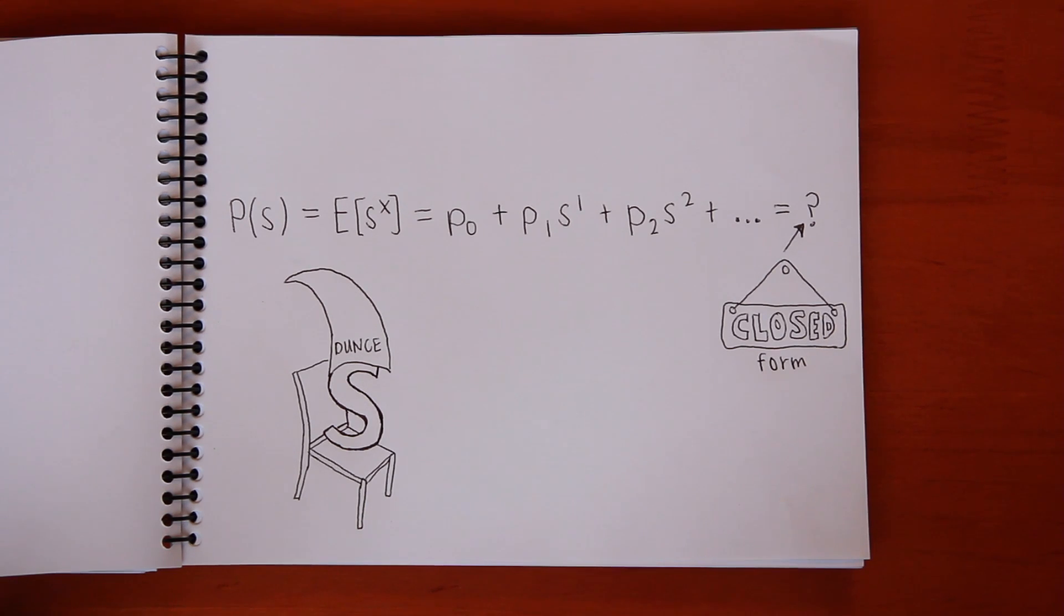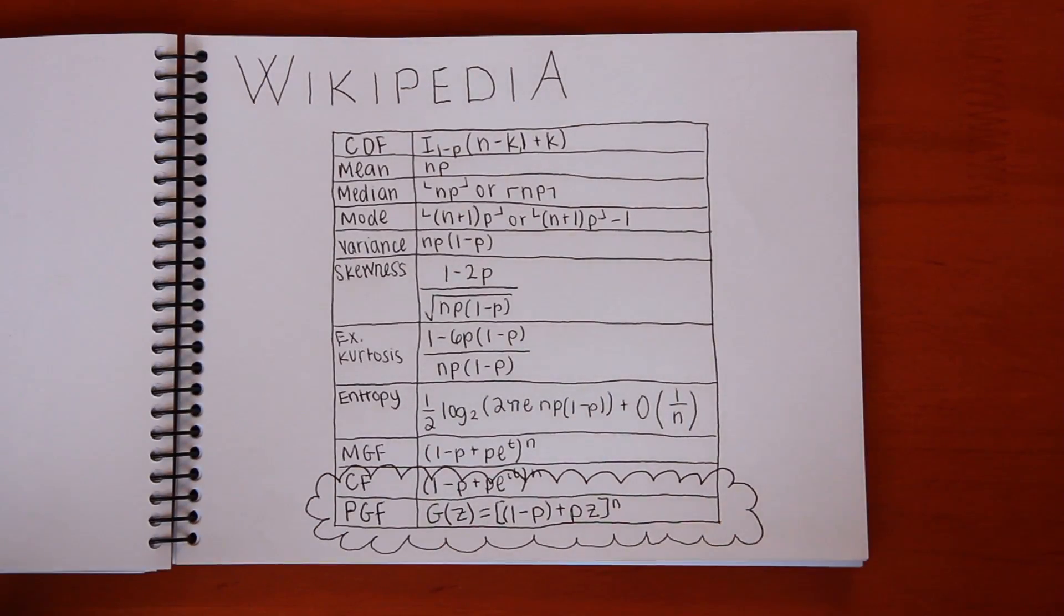Sometimes this sum will converge to a simple algebraic formula. For many known probability distributions, the algebraic expression of the probability generating function, or PGF, may be found in textbooks or even on Wikipedia.